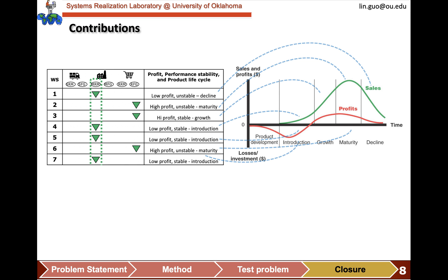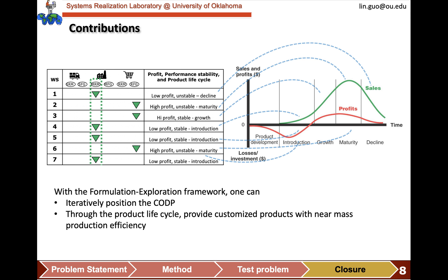In different phases of the product lifecycle, we can position the CODP at these two points, accommodating the different priorities of profit, service level, and player equality. In the introduction and decline phases, the CODP is at the MRM, making the make-to-order part longer. Whereas in the growth and maturity phase, the CODP is at the RFG, and the whole supply chain is a make-to-stock supply chain. With the formulation exploration framework, we can iteratively position the CODP, and through the product lifecycle, provide customized products with near mass production efficiency.